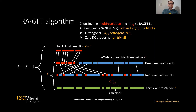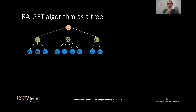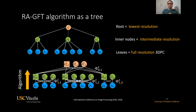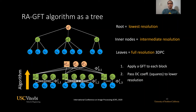The zero-DC property requires a little bit more work, which we will discuss in the following slides. The RAGFT algorithm can also be described as a tree, where we start with a full resolution point cloud and each point corresponds to a leaf. Inner nodes correspond to an intermediate resolution point cloud, and the root corresponds to a low resolution point cloud. This way the algorithm goes from high resolution to low resolution, and after applying the GFT to each block, it propagates the DC coefficient to a lower resolution level. DC coefficients are represented by squares.